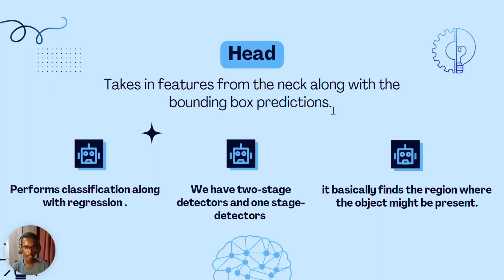Finally, we have the head of the network. Once we finish with the neck, we take the features from the neck and perform predictions — predictions for the classes and for the bounding boxes. The head part of the YOLO v4 architecture performs classification along with regression. We have two-stage detectors and one-stage detectors, which are performed on the head part of the network, and it finds the region where the object might be present. That's all about this video — thank you.